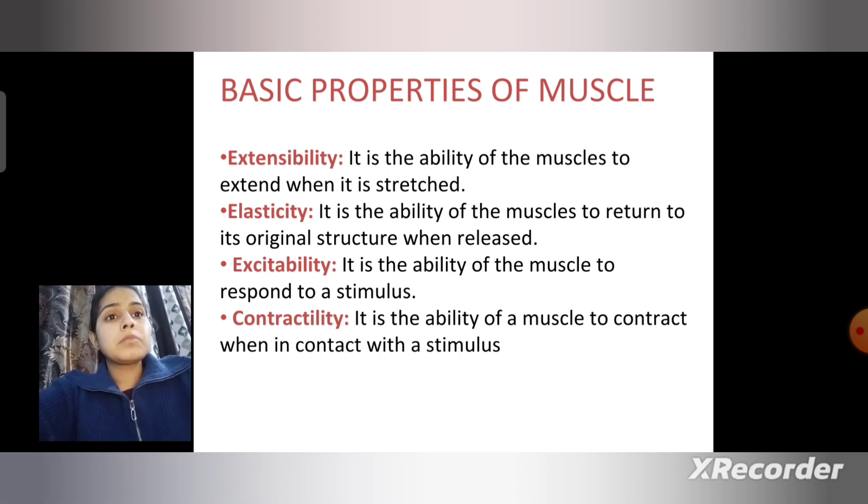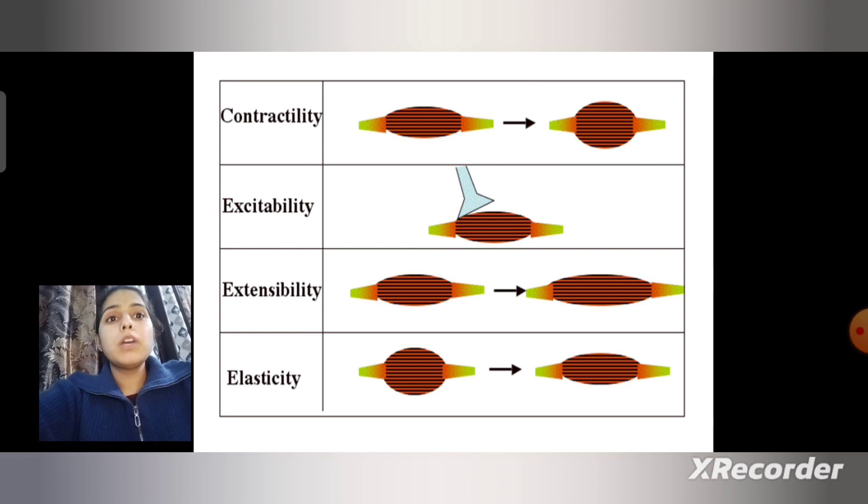This figure shows the properties of muscles. First is contractility - when muscle comes in contact with a stimulus, it contracts and becomes shortened. Excitability means when it comes in contact with a stimulus, it gets excited or stimulated.